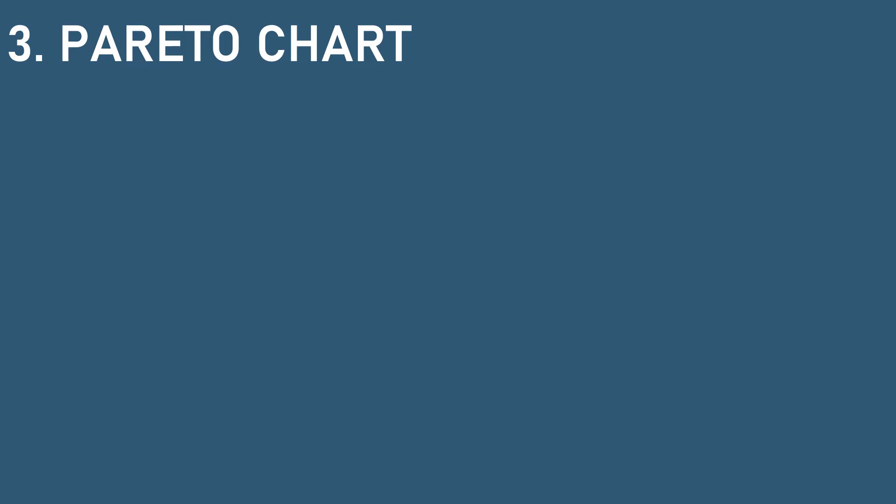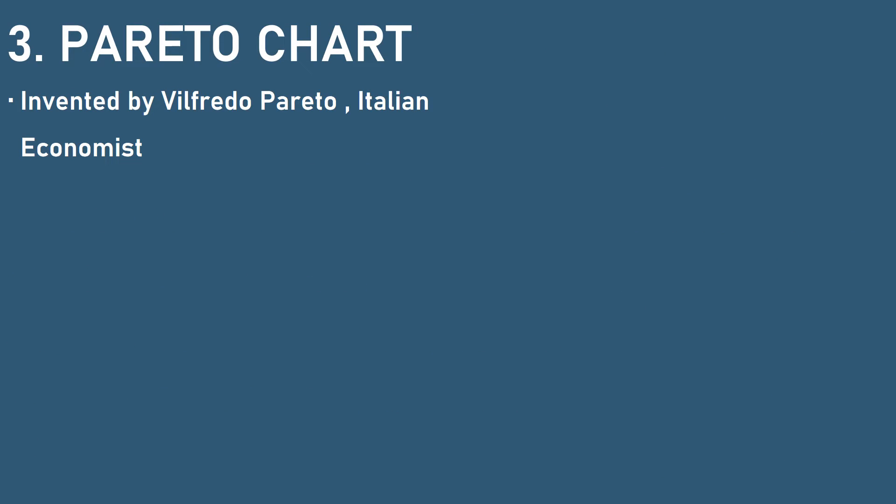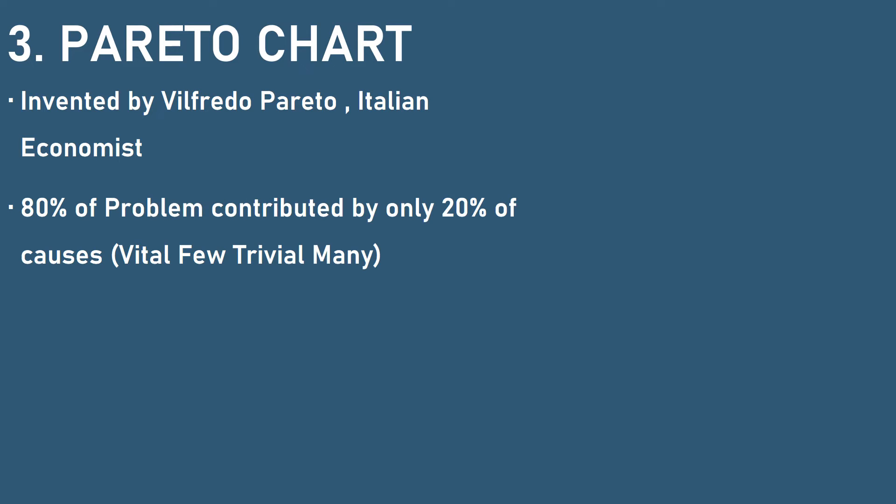The third tool is the Pareto chart. It was invented by Vilfredo Pareto, an Italian economist. He discovered that 80% of the money in the world was held by 20% of the people. This was well appreciated across the world, and this concept was further taken to the quality field by Ishikawa, who reiterated it as: 80% of problems are contributed by only 20% of causes.